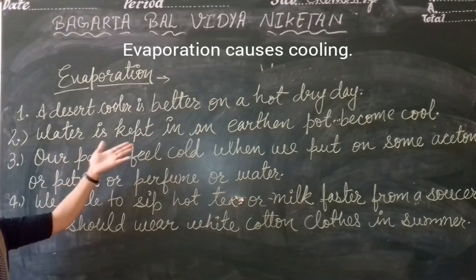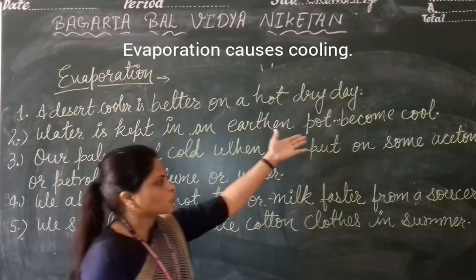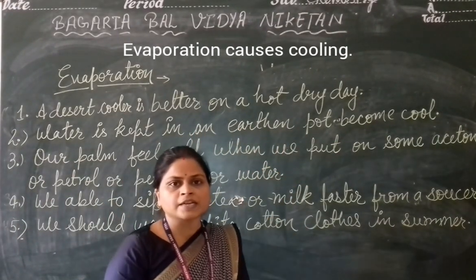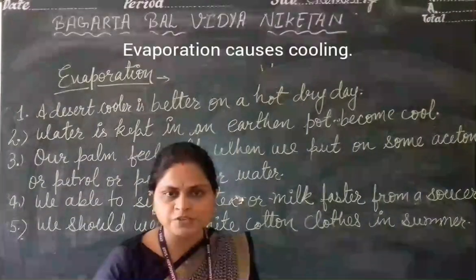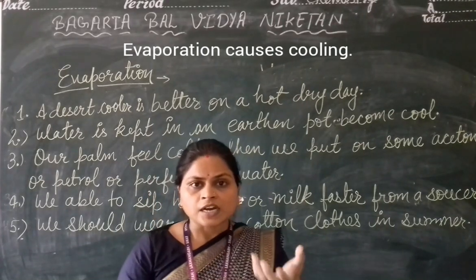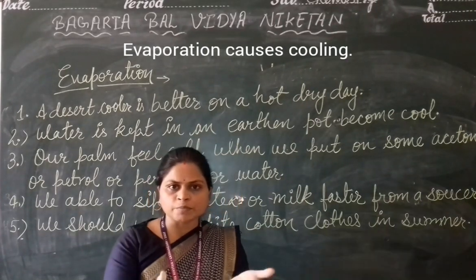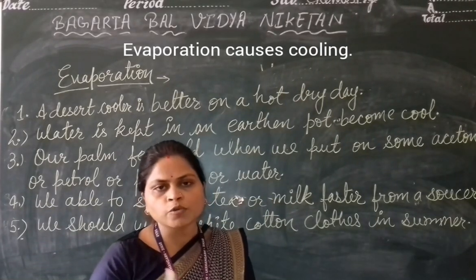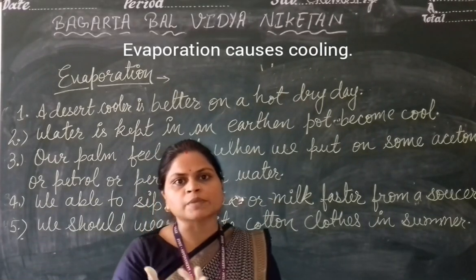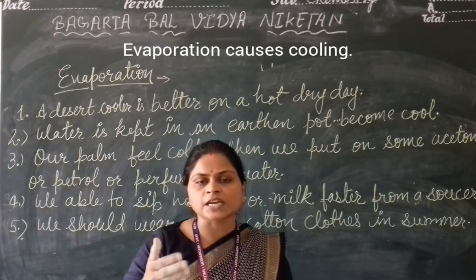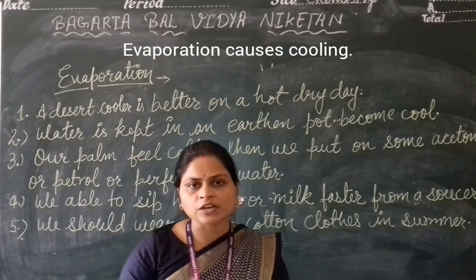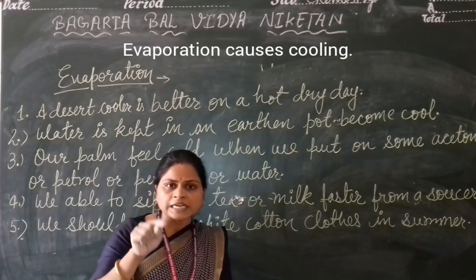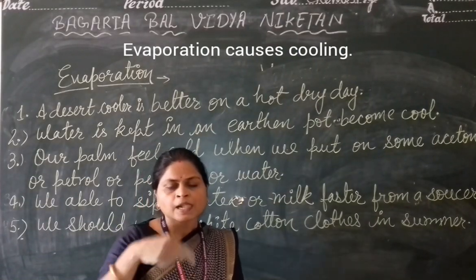The second example: water kept in an earthen pot, called a matka, becomes cool. The earthen pot has tiny pores, and through these pores the water slowly evaporates. We know that in evaporation, the liquid is converted into gas.